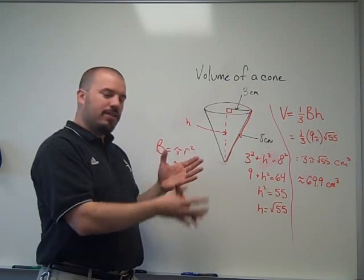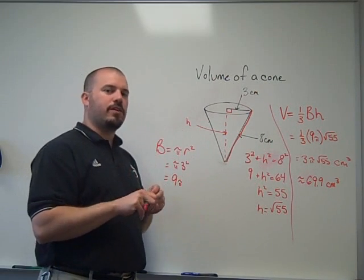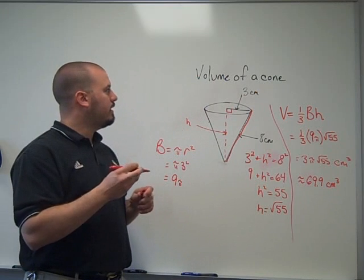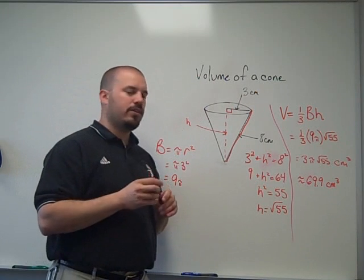Whereas slant height, it's on the surface, so it's part of the surface area of a cone formula. All right, volume of a cone, one-third, area of the base times height.